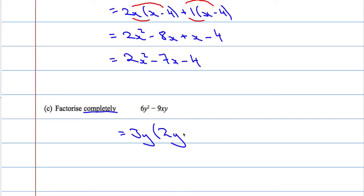If that sign is negative, we've got to have a negative sign here. What do I multiply 3y by to make 9? Must be 3. And what do I multiply 3y by to make xy? It must be x.